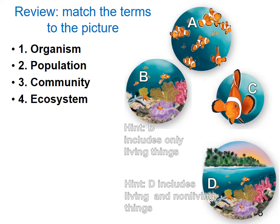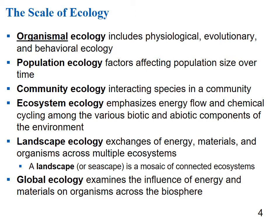Organismal ecology includes physiological, evolutionary, and behavioral ecology. Population ecology looks at anything that affects population size over time. Community ecology is when different species interact together. Ecosystem ecology focuses on energy flow, chemical cycling, and the biotic and abiotic components of the environment. Landscape ecology looks at exchanges of energy, materials, and organisms across multiple ecosystems — a landscape or seascape is a mosaic of connected ecosystems. Global ecology examines the influence of energy and materials on organisms across the biosphere.